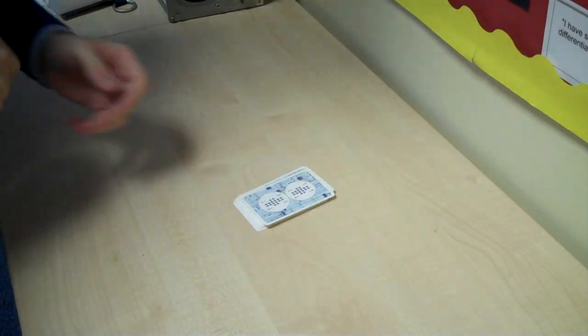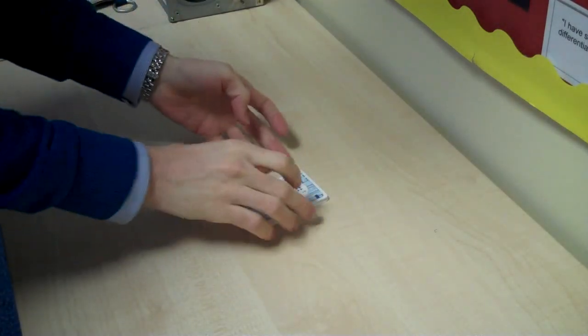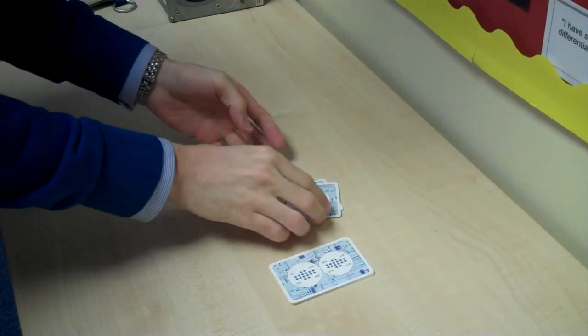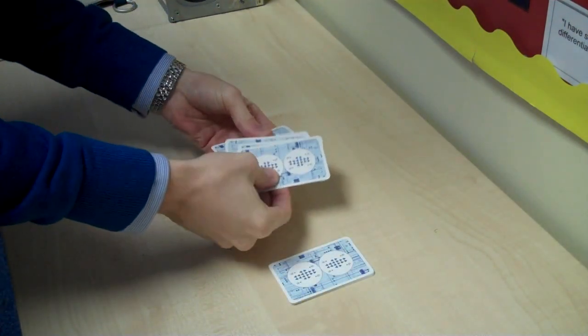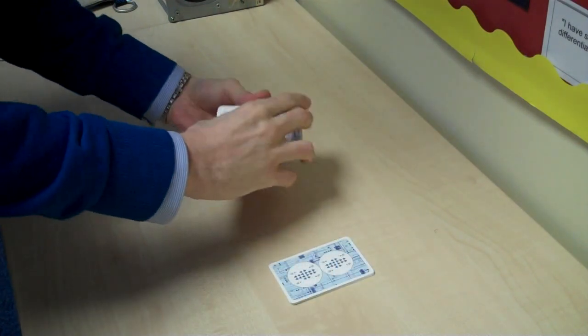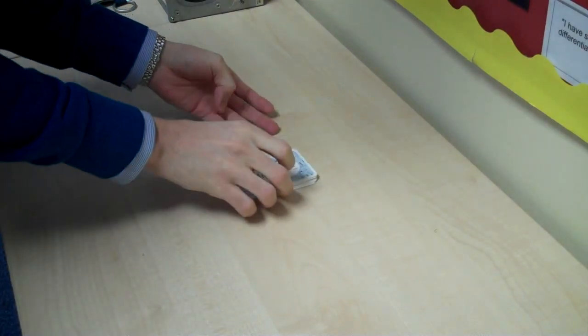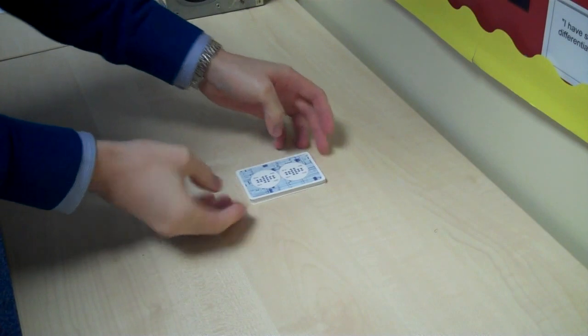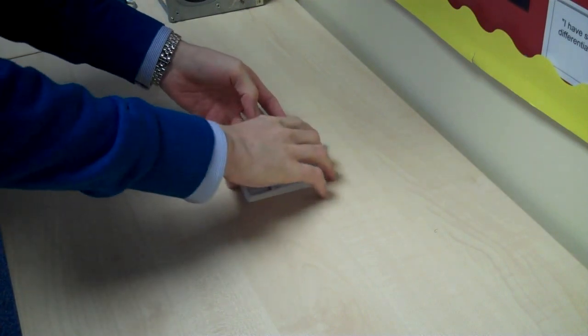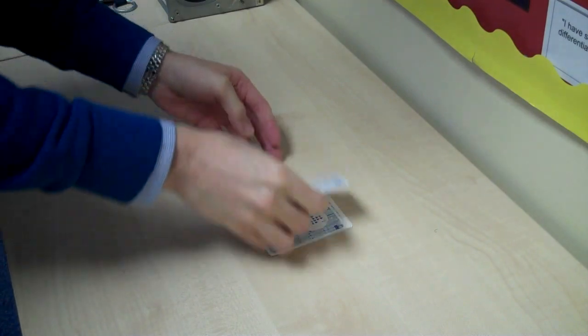So once we've done that, one, two, three. Say it like you mean it. And you say, Smelly armpits. We then get the children to cut the cards three times. Now, they must make sure they pick up all the cards and place it on top. If they start picking up a few of the cards, it will go wrong. So you must make sure they pick up all the cards and place it on top. They then do that the second time and place it on top.